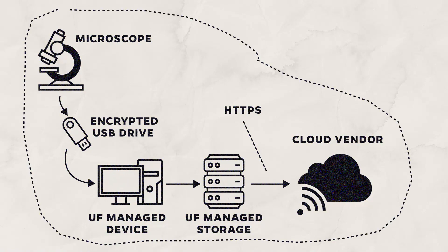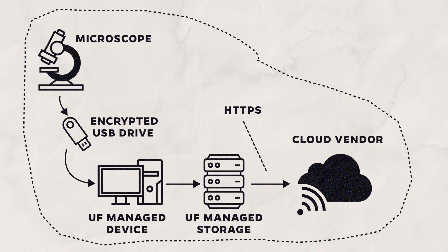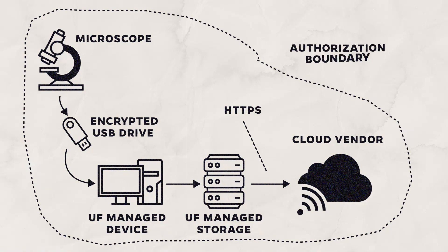Draw a circle around the components of the system the Information Security Office analyst is risk assessing, separating it from the parts not being assessed. This is called the authorization boundary, or scope of the risk assessment.